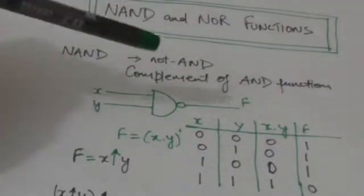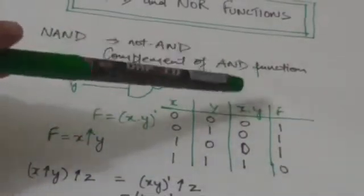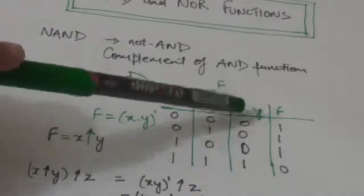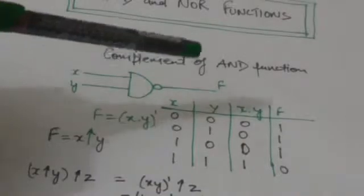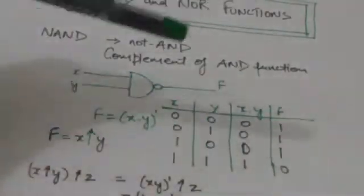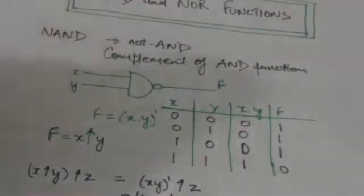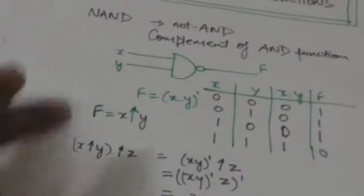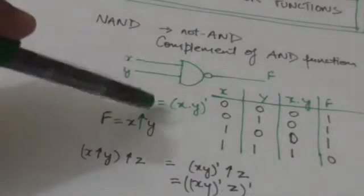F is the output. Since F is the complement of the AND function, it can be written as the complement of X and Y. Now, this is the truth table for F. When the value of X and Y is 0, the value of function F would be 1. When the value of X and Y is 1, the value of F would be 0. This is the operator symbol for the NAND function.